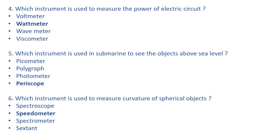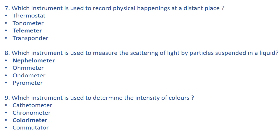Which instrument is used to measure the curvature of a spherical object? The right answer is spherometer. Spectroscope is used to record spectra. Spectrometer is used to measure the position of spectral lines. Sextant is used to measure the height of a very distant object and is used by navigators to find latitude.